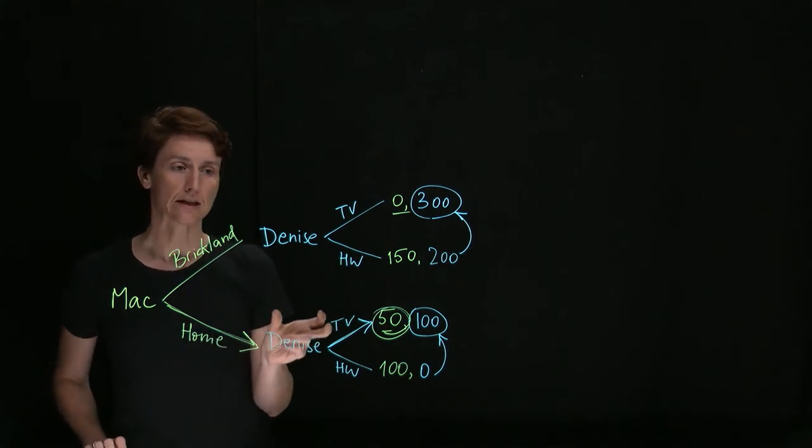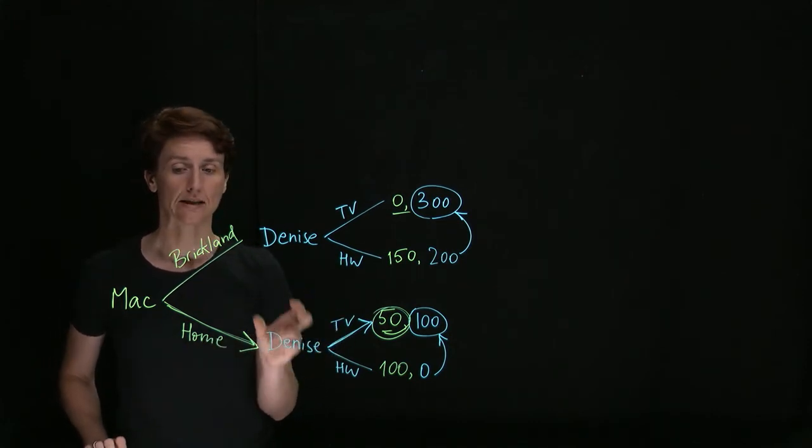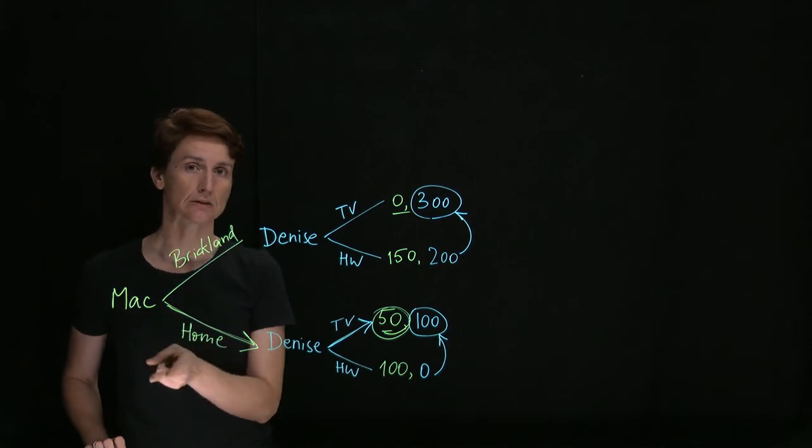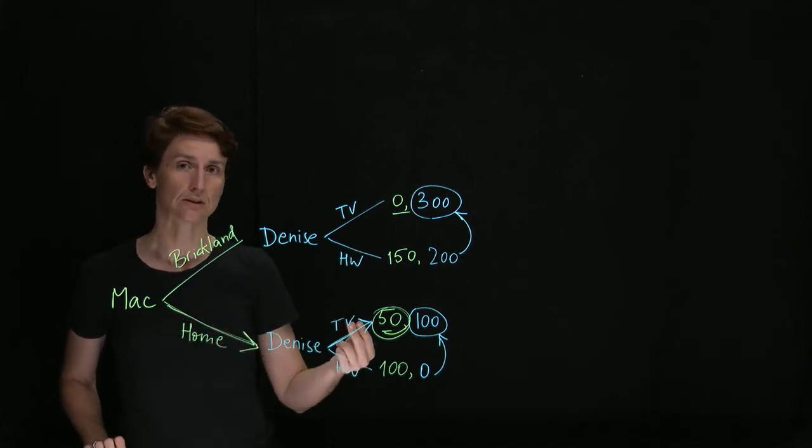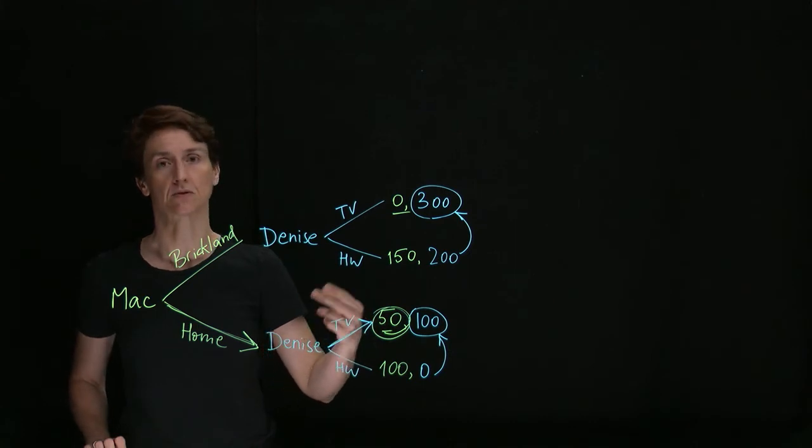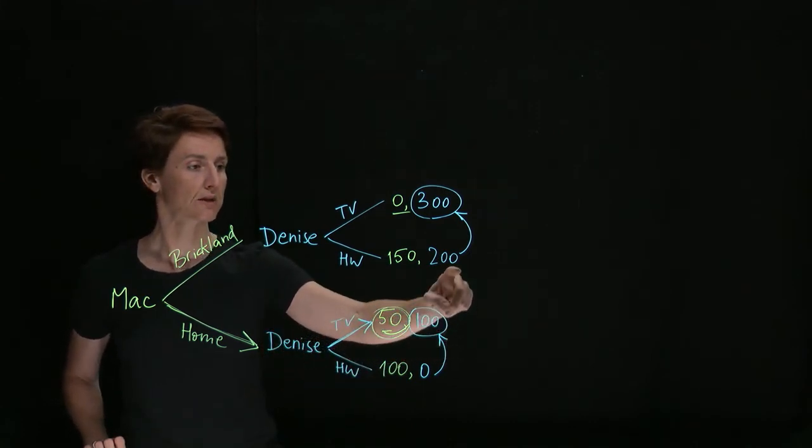If Denise keeps her word now, then she can expect Mac to trust her in the future. Every time in the future that he trusts her and she keeps her word, she can expect to have a surplus higher by 100.